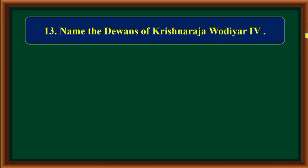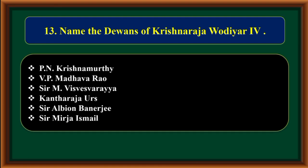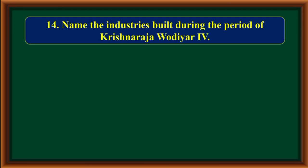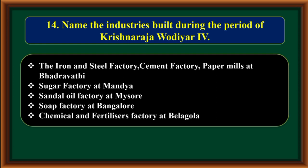Name the industries built during the period of Krishna Rajavadir 4th. The Iron and Steel Factory, Cement Factory, Paper Mills at Bhadravati, Sugar Factory at Mandya, Sandalwood Oil Factory at Mysore, Soap Factory at Bangalore, and Chemical and Fertilizers Factory at Belagula were established.